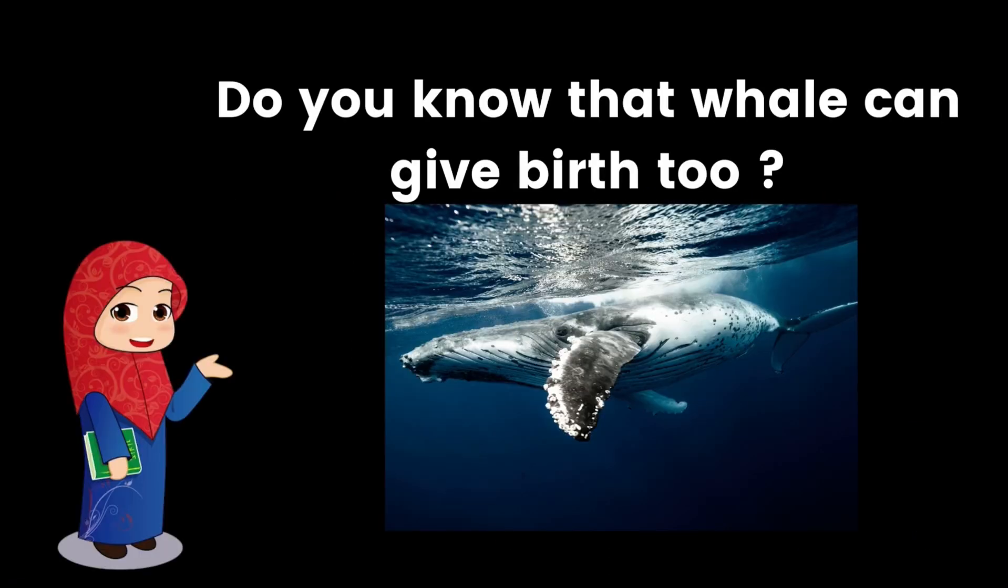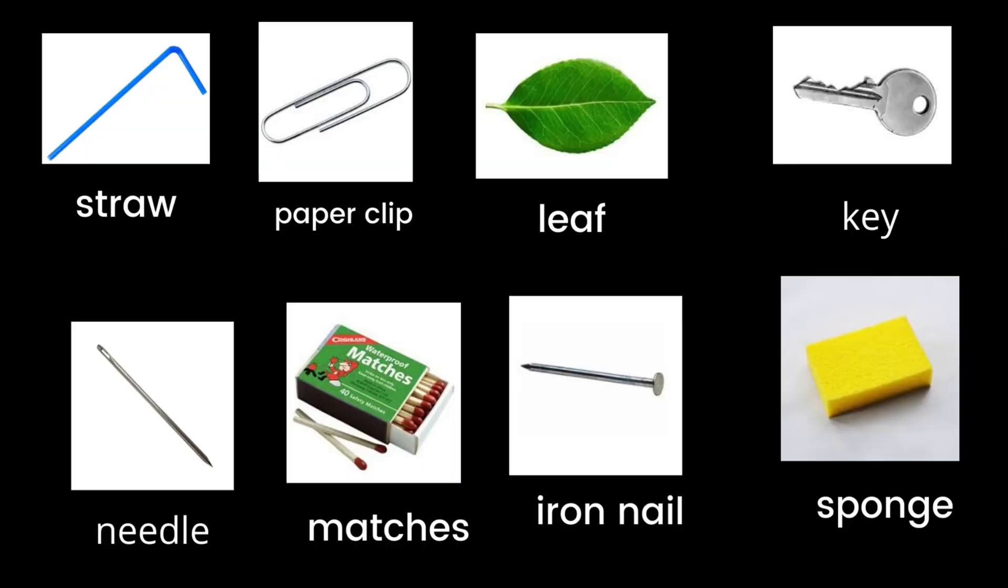Now I want you to answer the question. Look at the pictures and classify the objects. We have straw, paper clip, leaf, key, needle, matches, iron nail, and also sponge.